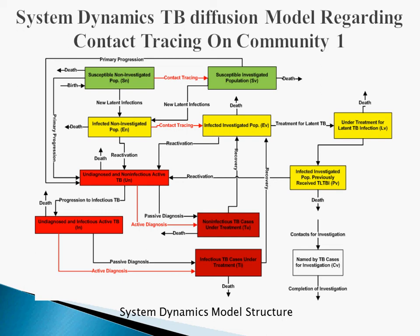The key thing — and this illustrates some trade-offs between agent-based and system dynamics modeling — is that those people brought in for contact tracing are anonymous and homogeneous. We don't know who they are. So when people complete investigation, we need to move them between stocks but don't know their identities, so we assume the contacts are distributed the same way as the whole population: if 55% of the population are susceptible, 55% of contacts are assumed susceptible.